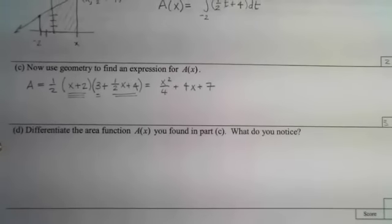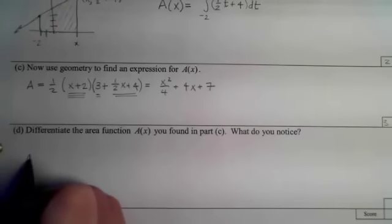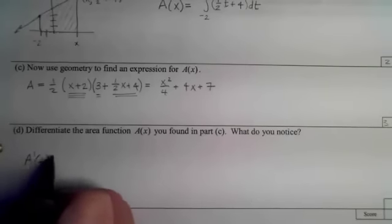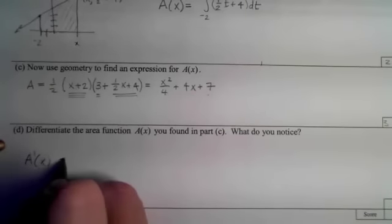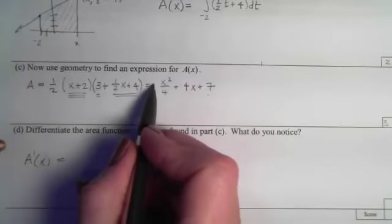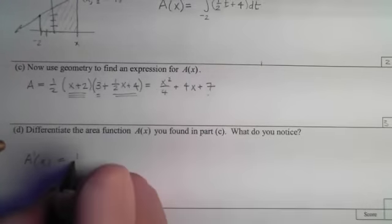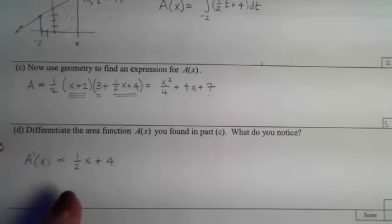Part d says now I want to differentiate that area function that we found in c and then we want to notice something. Because I multiplied it out it's going to make it easier for me to take the derivative. The derivative of that will be a 2 times an x over 4 which is a 1 half x plus a 4. So now what do we notice about that?